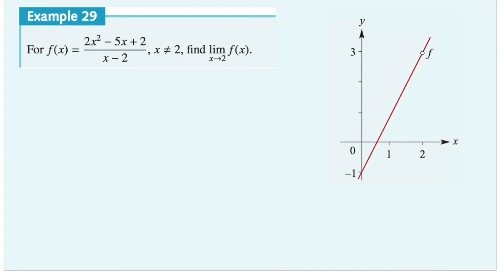In this case, we cannot directly substitute x equals 2 into this function because that's going to make the denominator equal to 0, and we know that's not going to work because in a fraction, the denominator can never be 0. So we need to factorize and simplify before we can substitute the value.